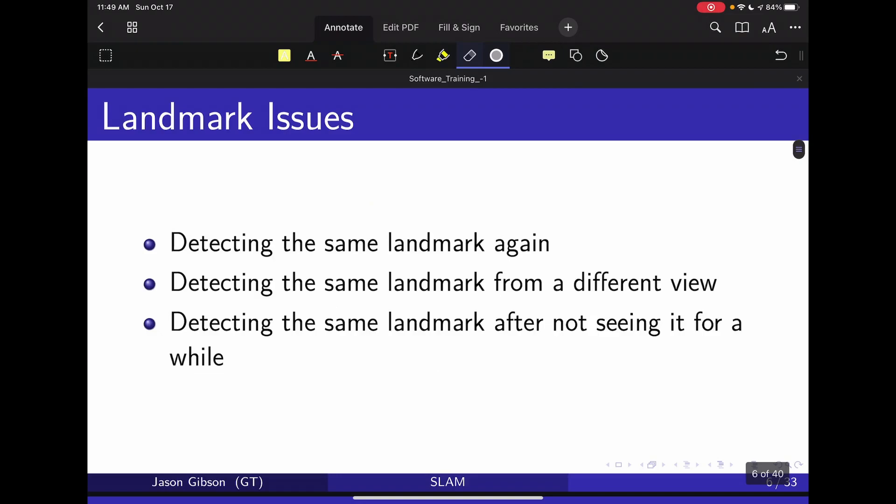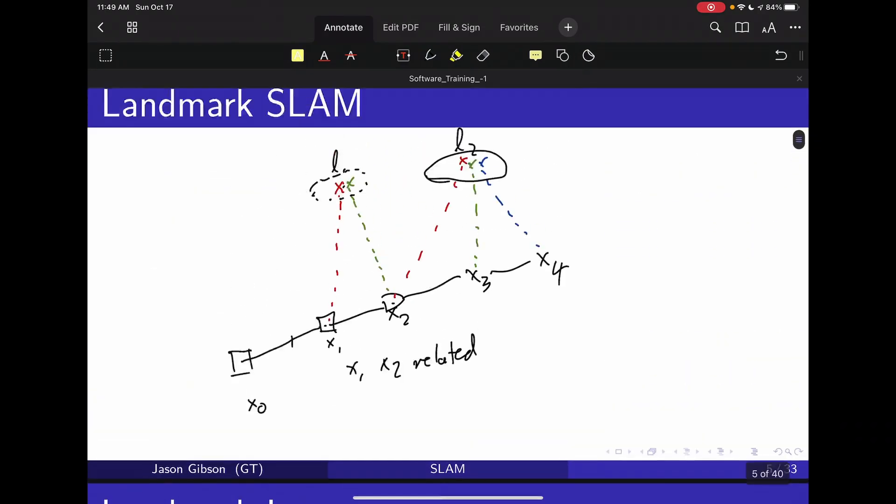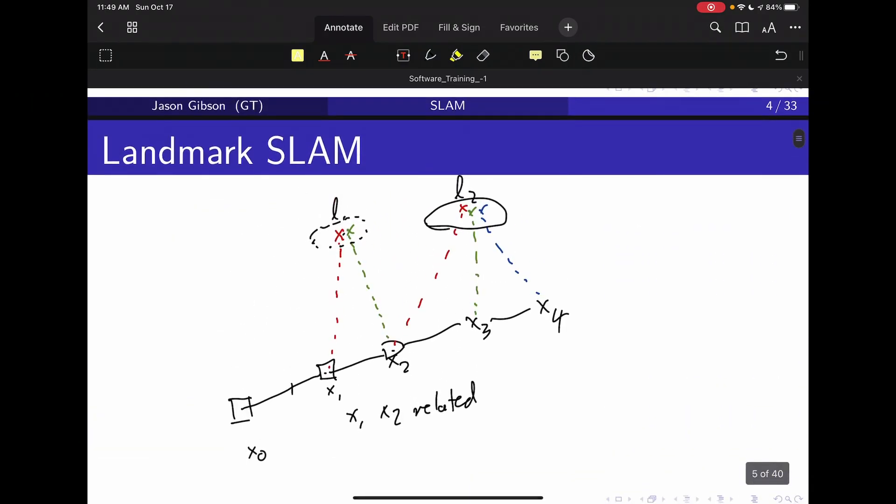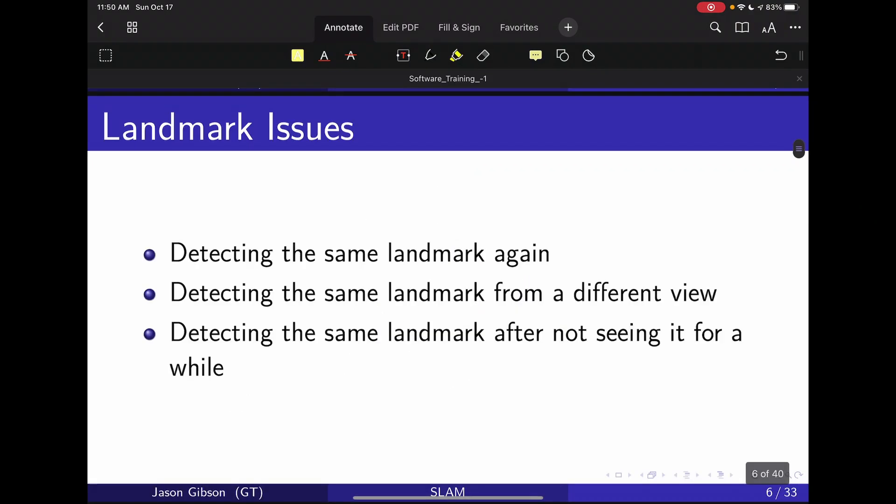So there's a couple of issues with landmarks. Can we detect the same landmark again? Let's say we're back in our problem up here, and from x1 I can see L1, and from x2 I can see L1. But let's say that I was actually at x2 and I couldn't recognize the fact that it was the same L1, it was just some other landmark. Now essentially what I have is nothing. I have no constraint that constrains x1 and x2, they are no longer related, and I can't use that information to further constrain my pose.